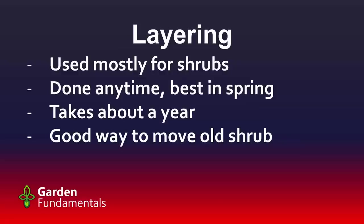Plants that don't make their own runners can be propagated using layers — a process where we force a branch into the ground until it roots. This works with almost all shrubs and can be done at any time of year. Whenever I see a plant I want to propagate, I just start the layering process. It's a slow process, taking anywhere from six months to a year in colder climates. It's also a good way to handle old shrubs: instead of digging up a large shrub and losing most of the roots, I do some layering, get new growths going, move those, and then dig out and get rid of the old plant.